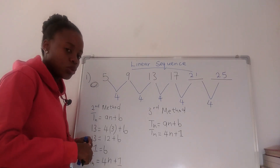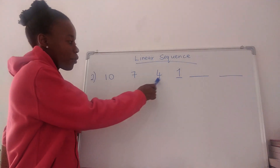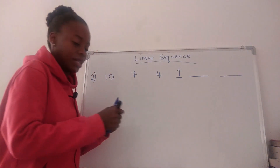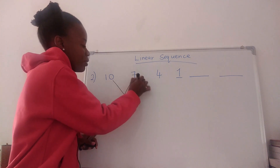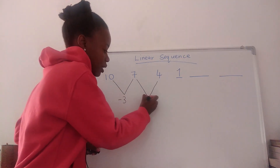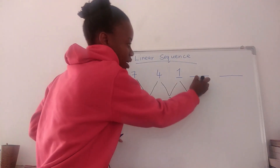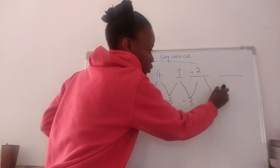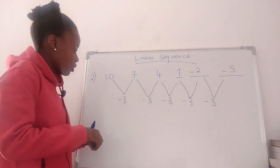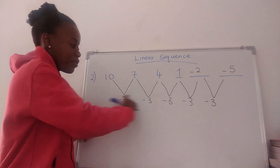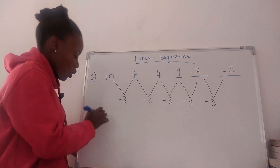Number two, we have 10, 7, 4, 1, dash, dash. We need to fill in the next two terms. The difference between terms is negative 3 each time. So 1 minus 3 is negative 2, and negative 2 minus 3 is negative 5. Those are the next two terms. This is a linear sequence because the first difference is constant.